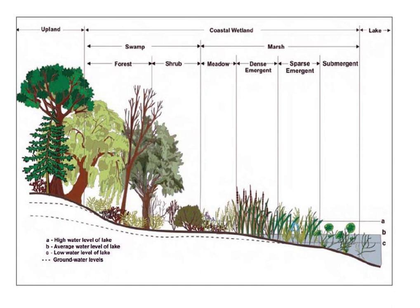Marshes provide a habitat for many species of plants, animals, and insects that have adapted to living in flooded conditions. The plants must be able to survive in wet mud with low oxygen levels. Many of these plants therefore have aerenchyma, channels within the stem that allow air to move from the leaves into the rooting zone. Marsh plants also tend to have rhizomes for underground storage and reproduction.